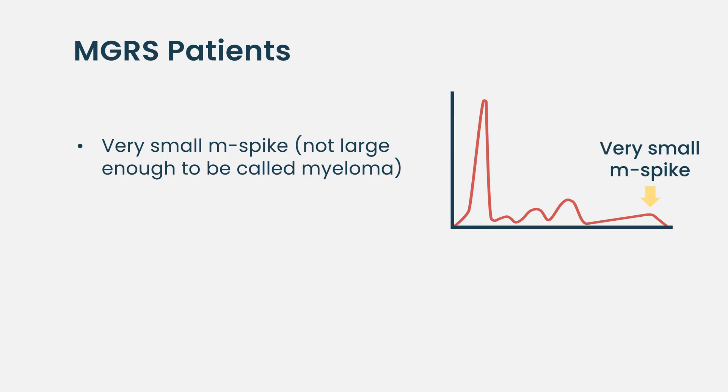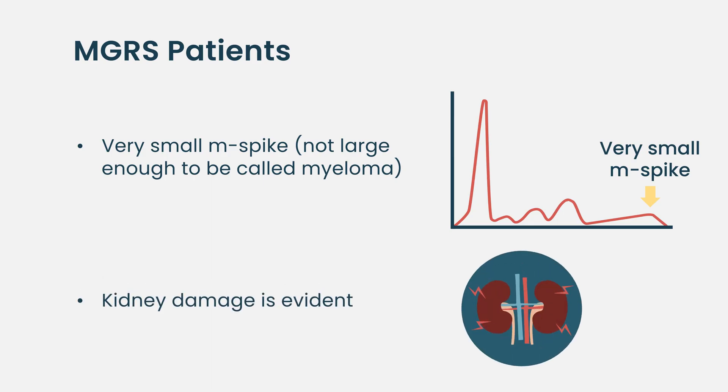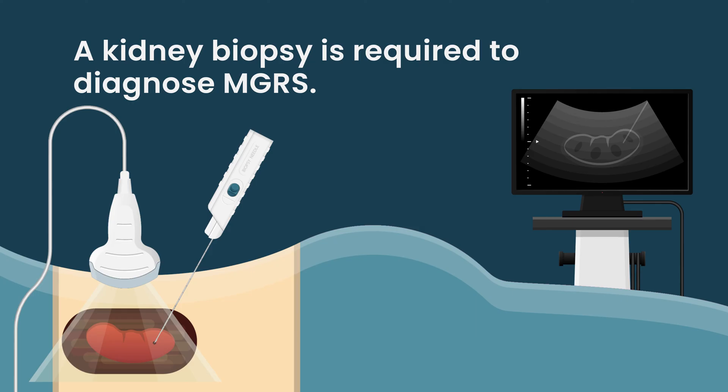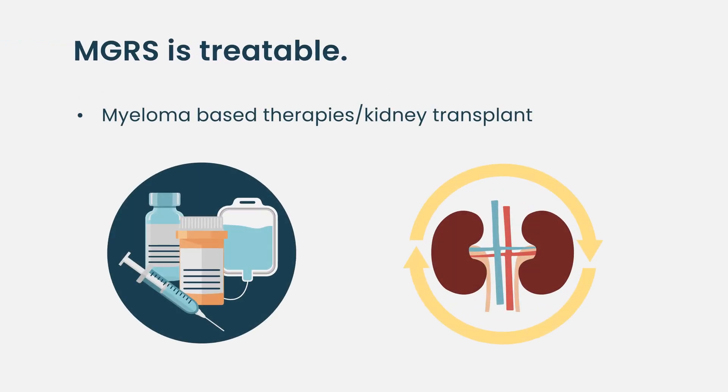But then you look at a subset of patients that have this kind of small M spike — not enough to call it myeloma — but they do have kidney damage. This is a very evolving area with a recent definition. The only way to diagnose monoclonal gammopathy of renal significance is to get a kidney biopsy.